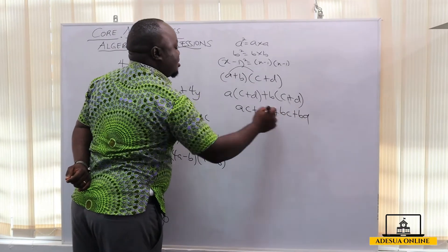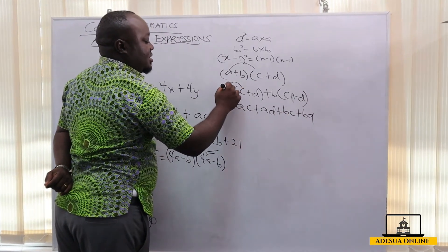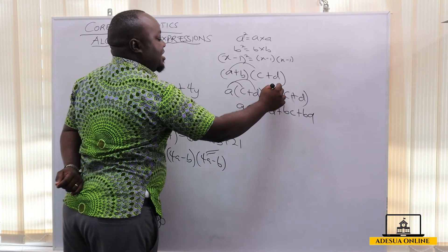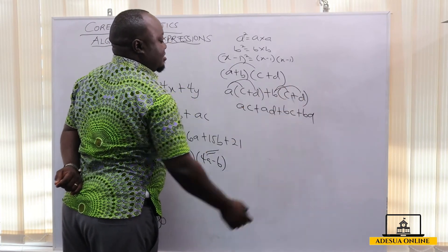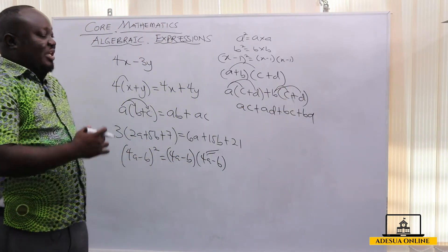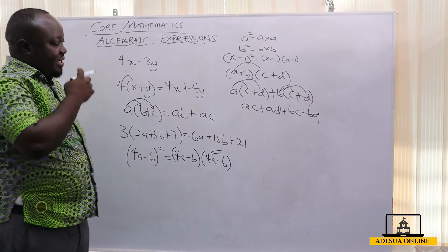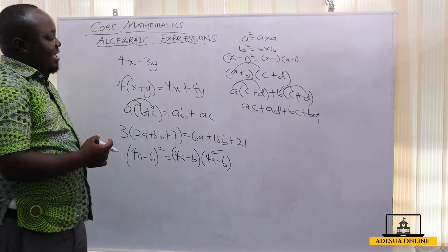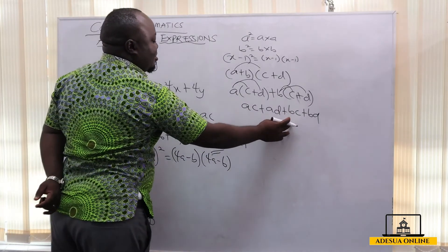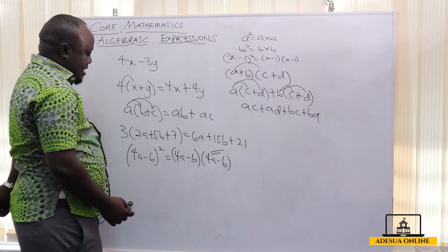We have a times c, a times d, b times c, and b times d. If there is the need to simplify further, only when the coefficients are the same can we simplify. But in this case we cannot simplify because the coefficients are all different.